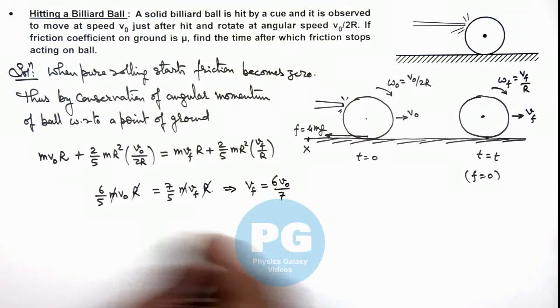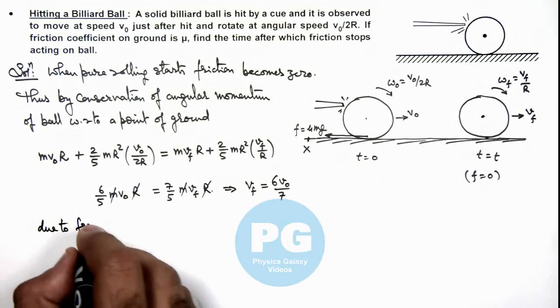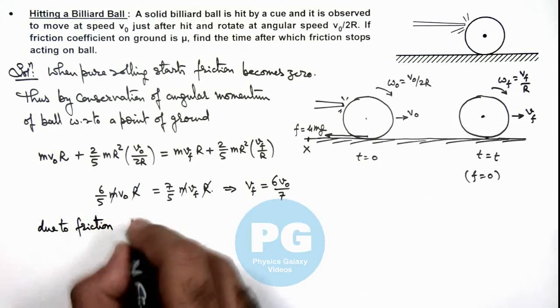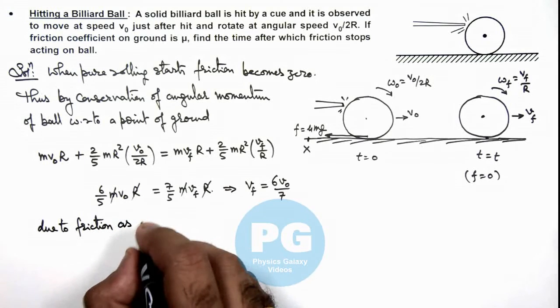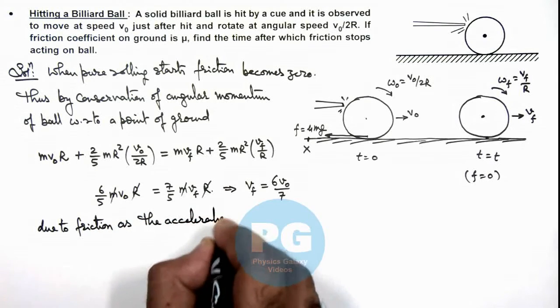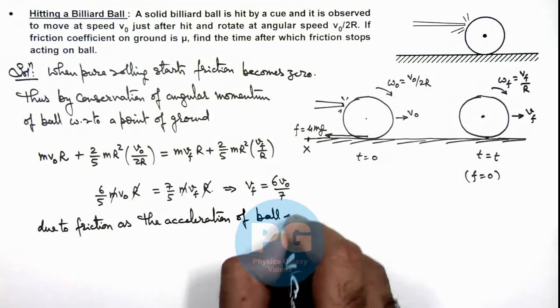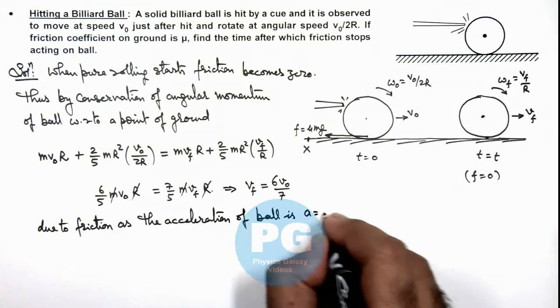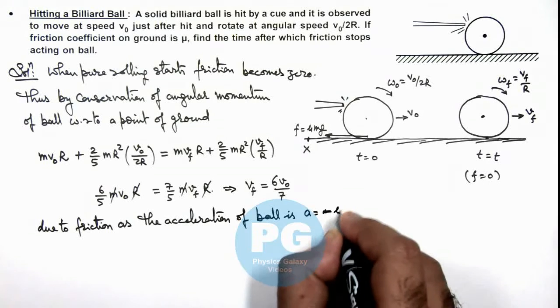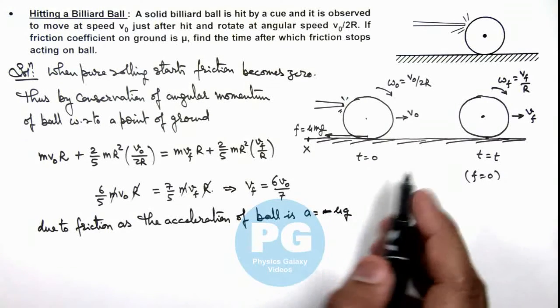Here we can see due to friction, the acceleration of ball is, we can consider it as -μg because due to friction it is retarding.